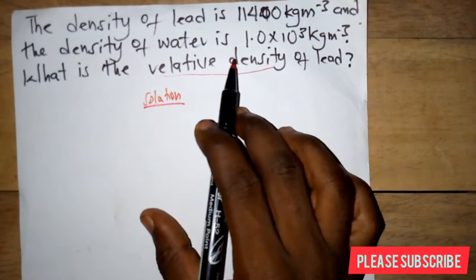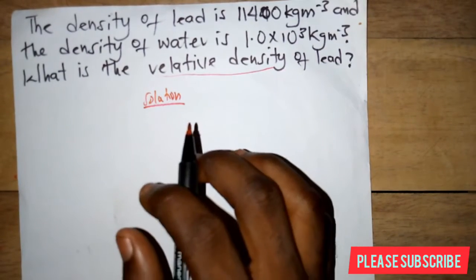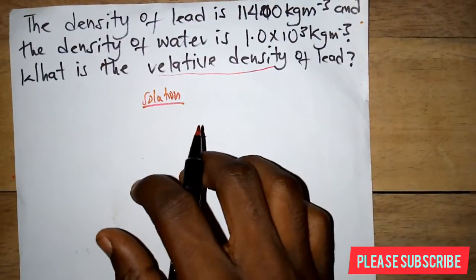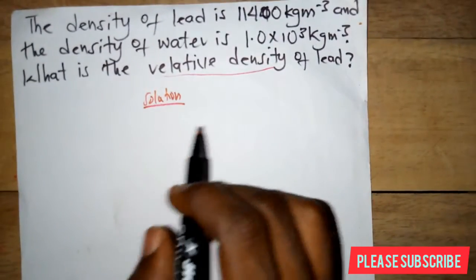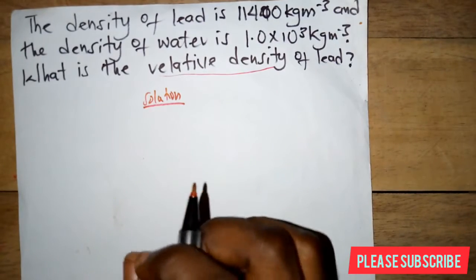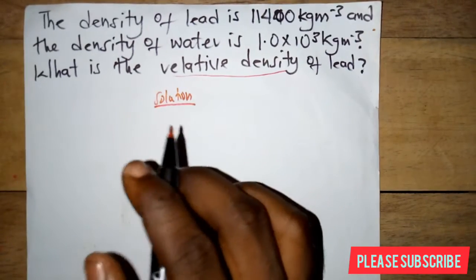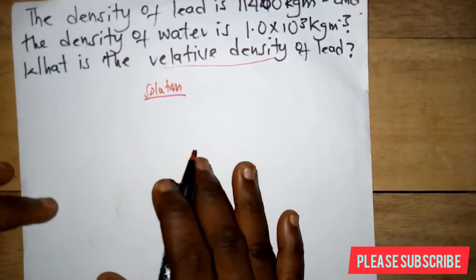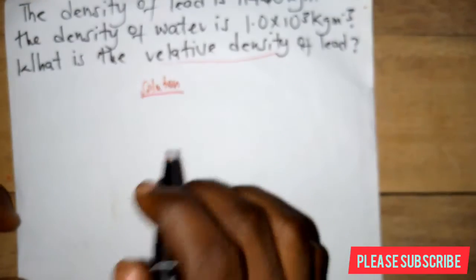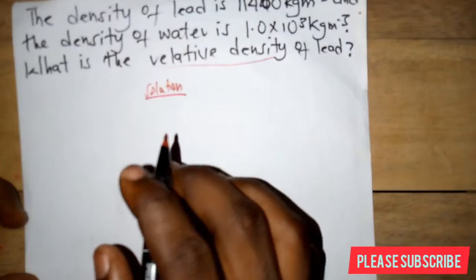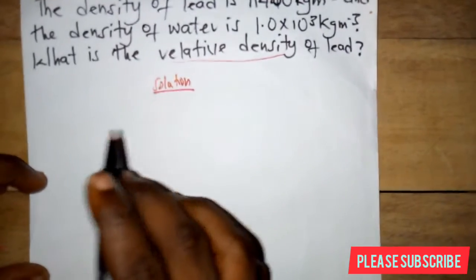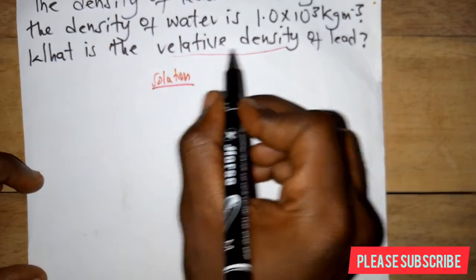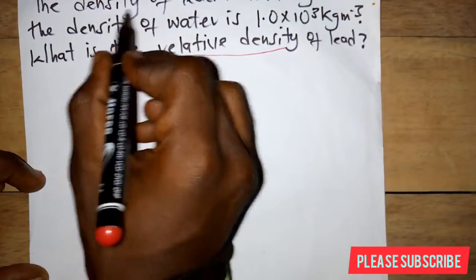Relative density is a ratio of the density of a substance to that of the density of water. One unique thing about relative density, which differs from density, is its unit — relative density does not have units, but density has units. We will see whether relative density has a unit or no unit in this question.